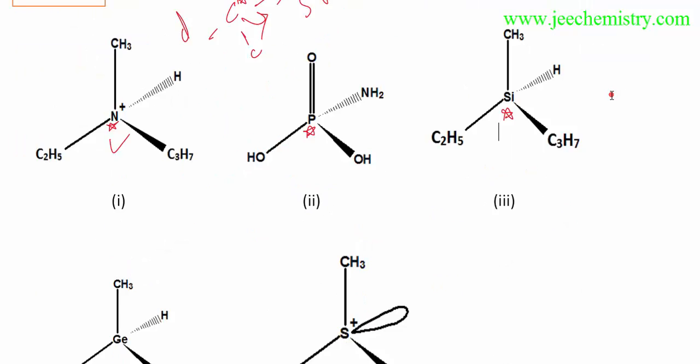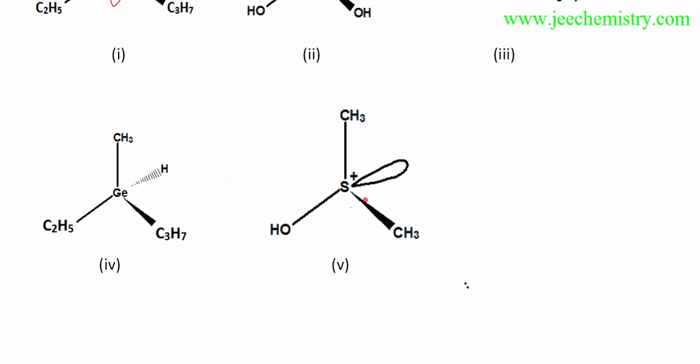This sulfur is also having four different groups, so this is showing chirality. Now this is not chiral - actually this compound is not chiral. There is some mistake I'm making in this example because two groups are identical here.